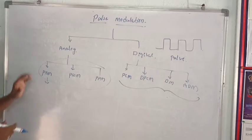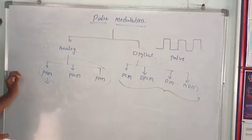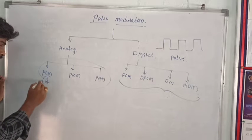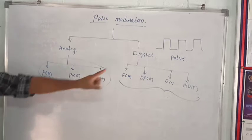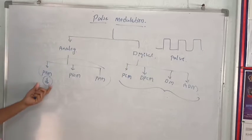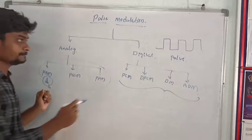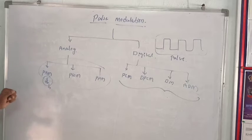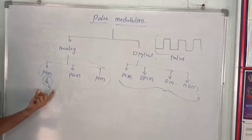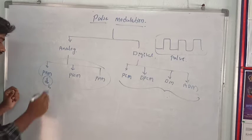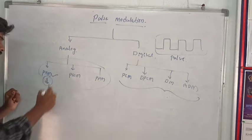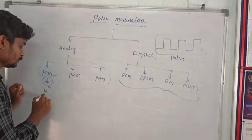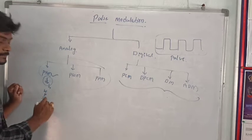What is Pulse Amplitude Modulation? The amplitude of the carrier pulse changes with respect to the amplitude of the message signal. This is called Pulse Amplitude Modulation. In this, the width and position of the pulse remain constant.